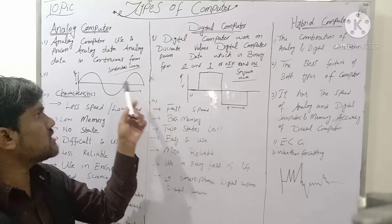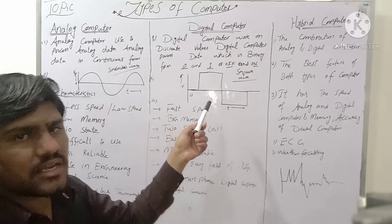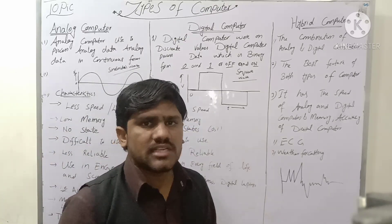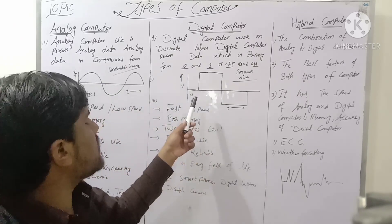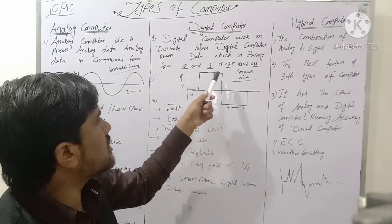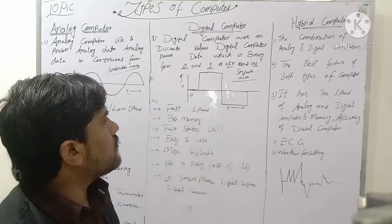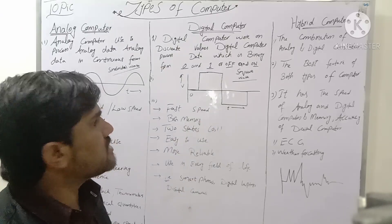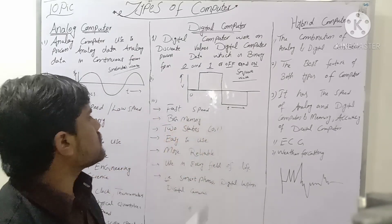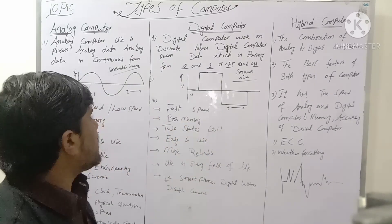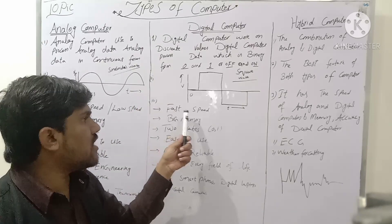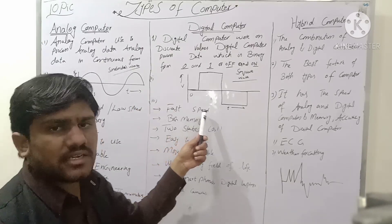If we plot a voltage and time graph for a digital computer, the result is in the form of zeros and ones. The waveform of a digital computer is a square waveform, representing the discrete values of zero and one.